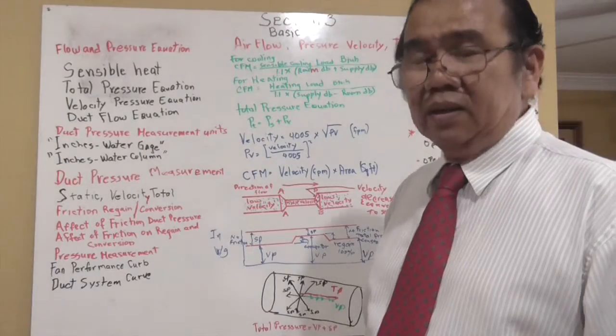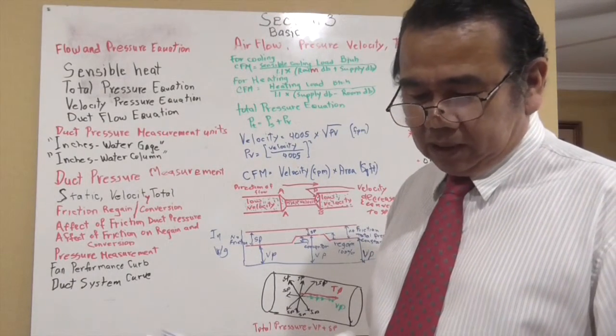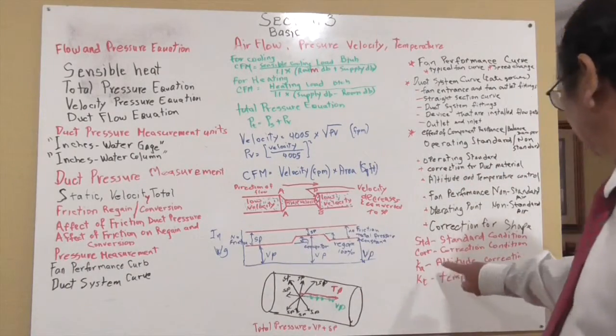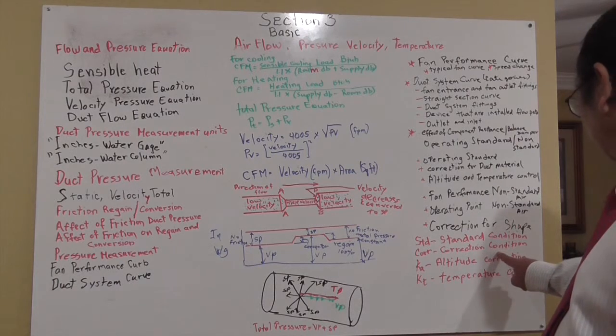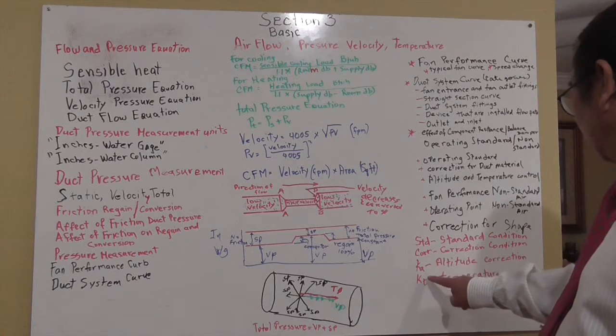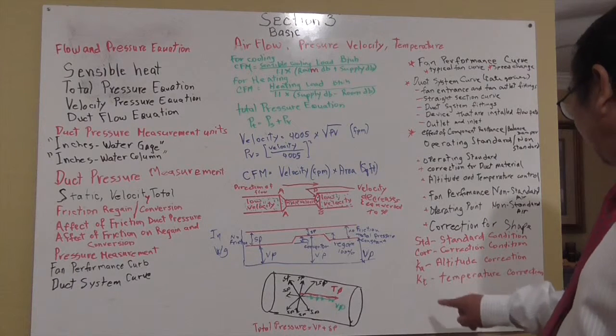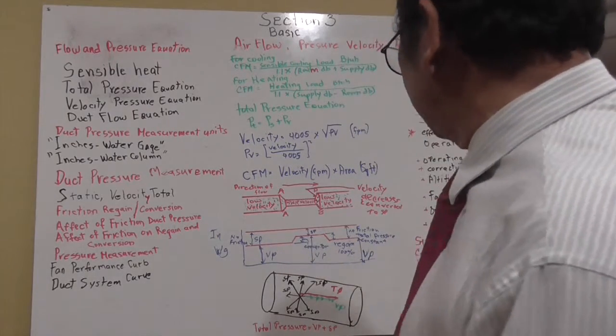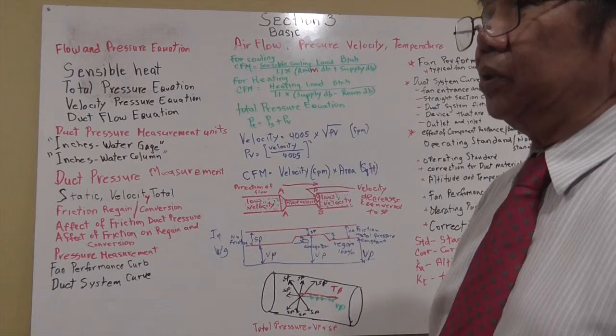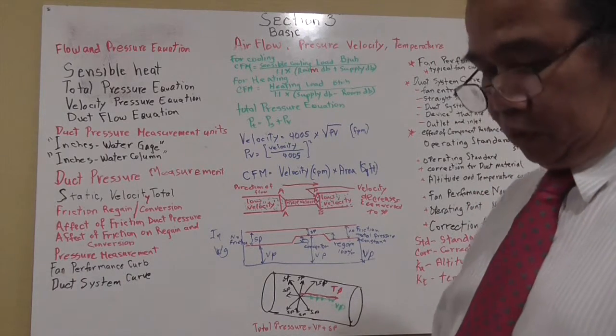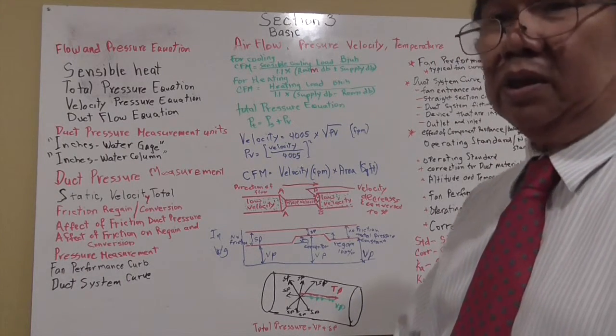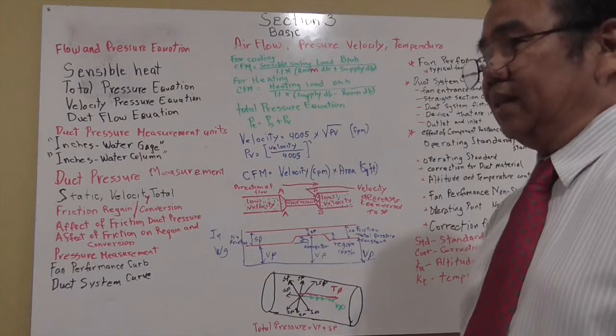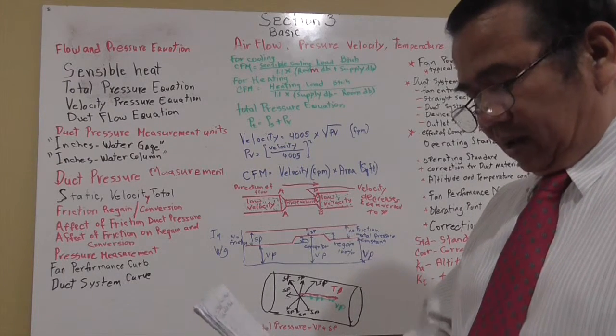The symbols used: STD for standard condition, CORR for correction condition, KA for altitude correction, and KT for temperature correction. When you see those symbols on a blueprint or design, make sure you put those into consideration and look more deeply to see where the correction was added.